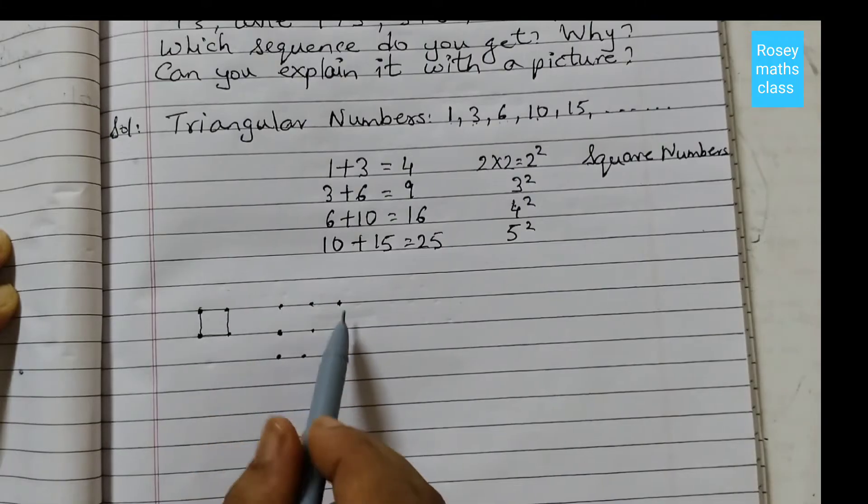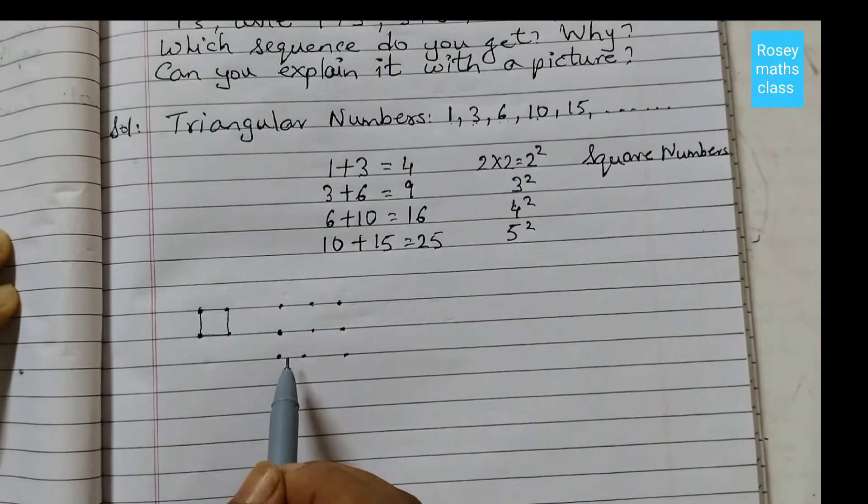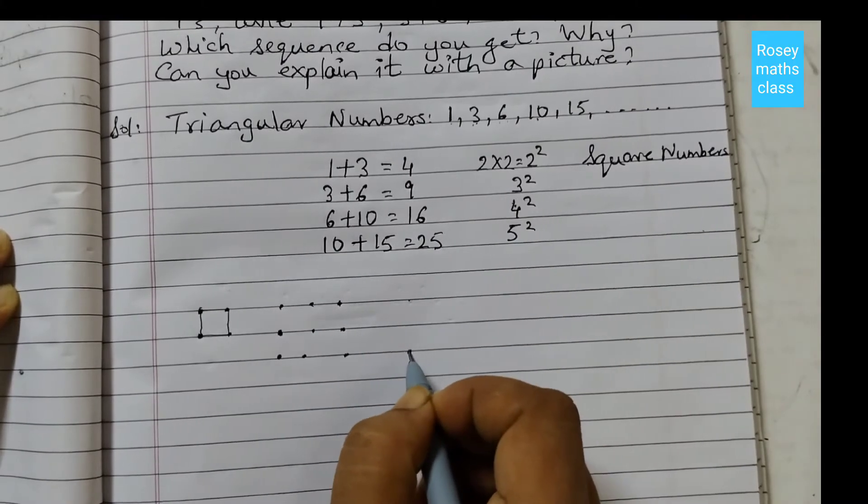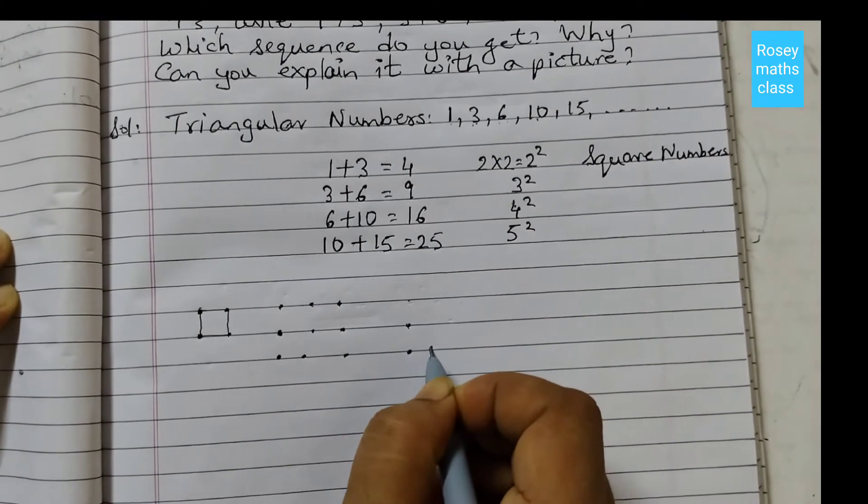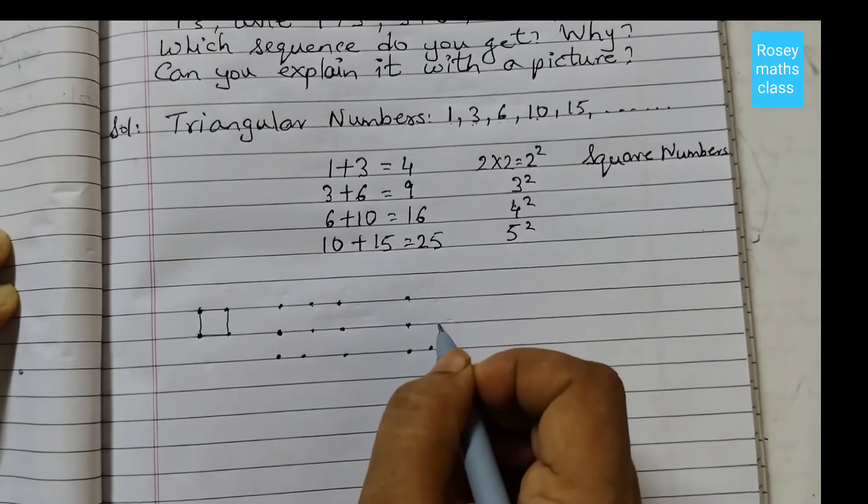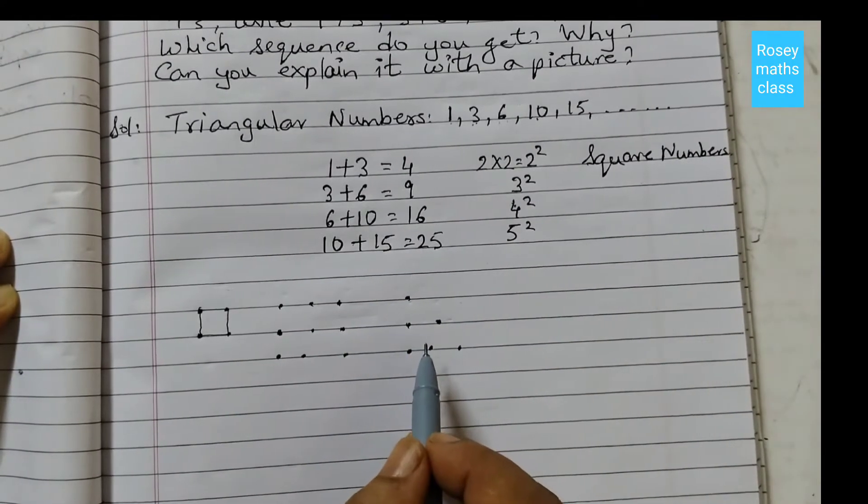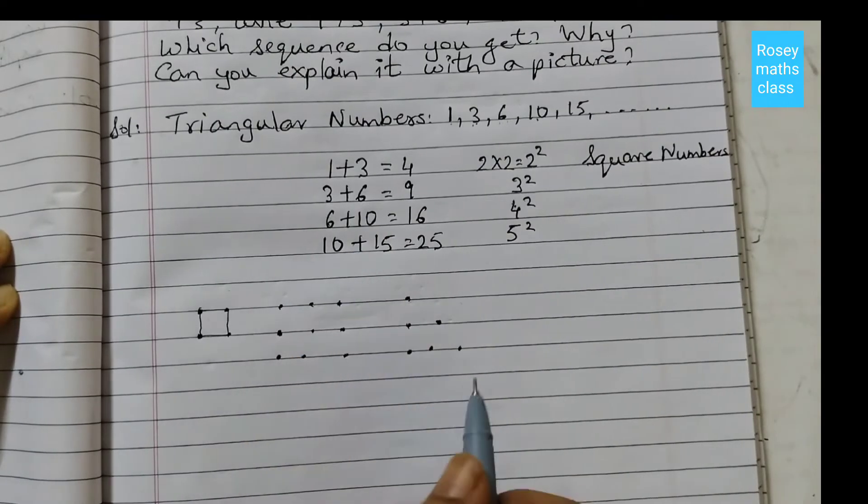6+10: show 6 dots. So we can say like this, 1, 2, 3, 4, 5, 6. So now this is a triangle. And now we will show 10 dots.